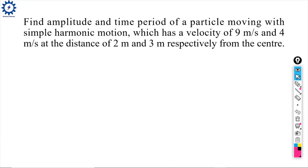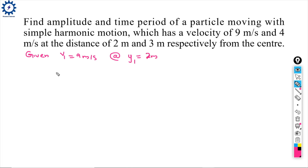Find the amplitude and time period of a particle moving with simple harmonic motion, which has a velocity of 9 meters per second and 4 meters per second at distances of 2 meters and 3 meters respectively from the center. Given: V1 = 9 m/s at displacement y1 = 2 m, and V2 = 4 m/s at y2 = 3 m.